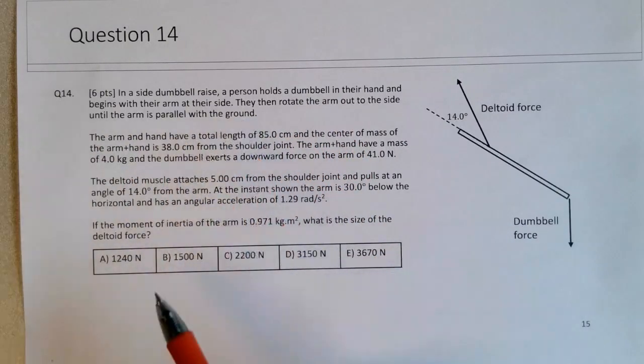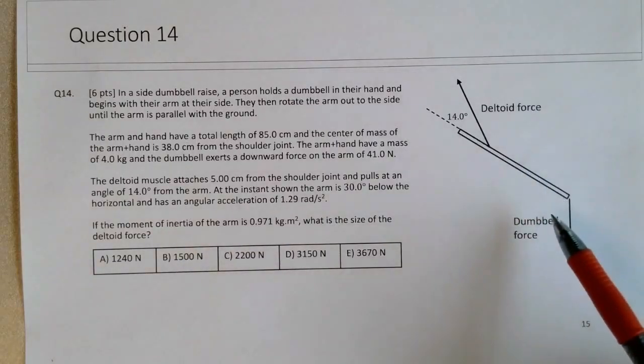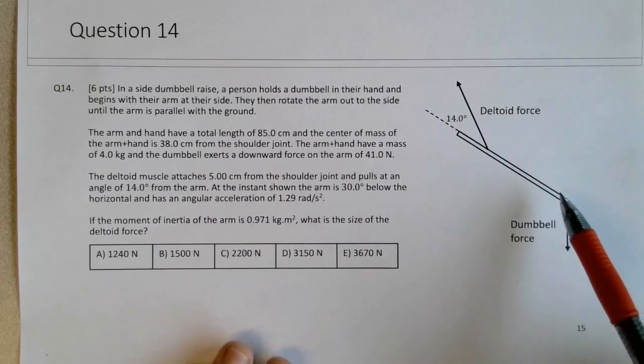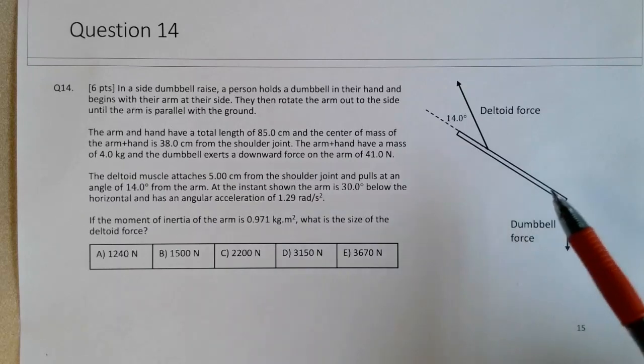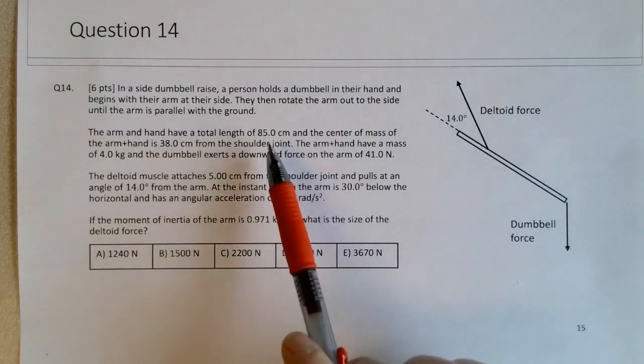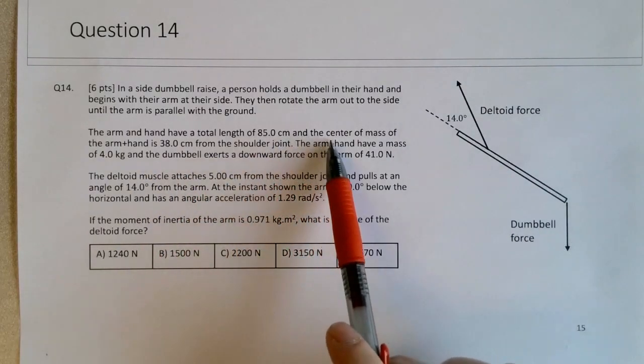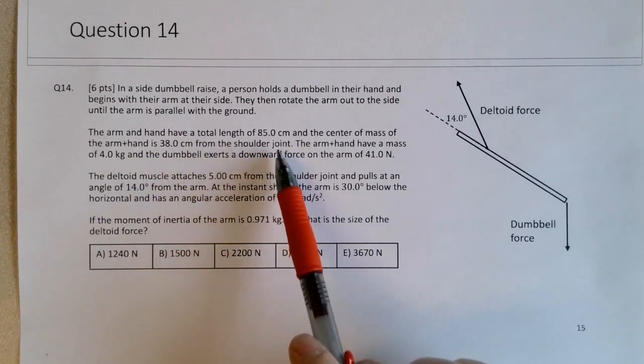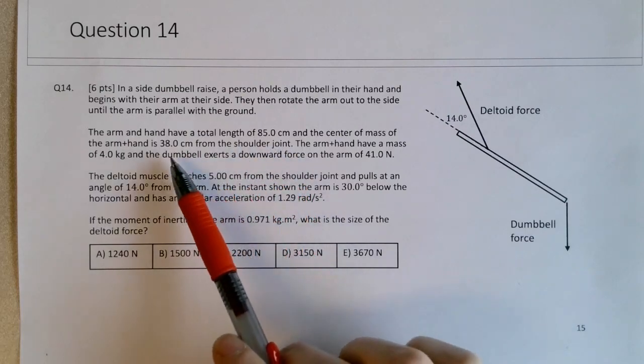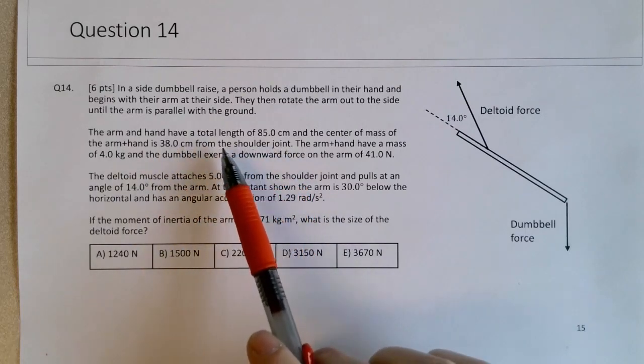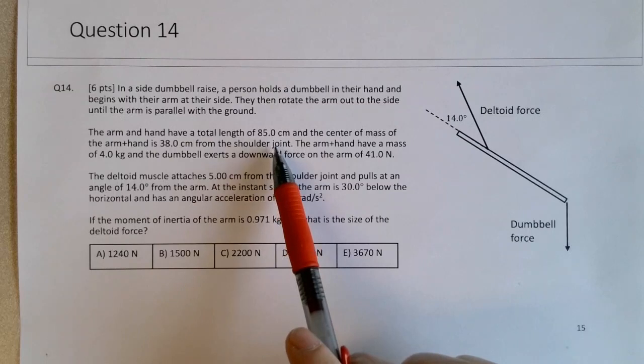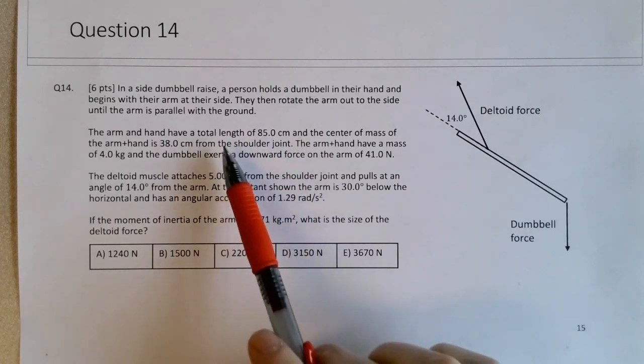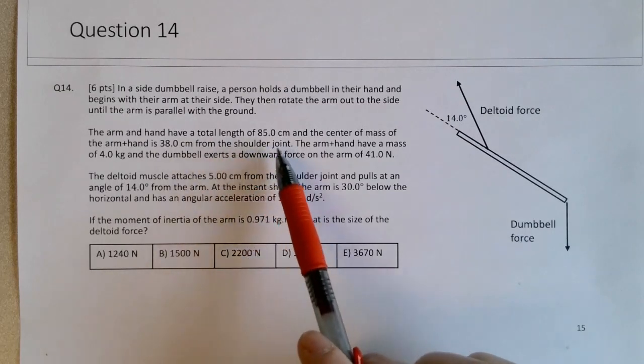Until the arm is parallel with the ground. We're looking at one particular instance in that exercise. We're told that the arm and hand have a total length of 85 centimeters, and the center mass of the arm and hand is 38 centimeters from the shoulder joint. So we're not treating it purely as a uniform rod. The center mass of the arm and hand is closer to the shoulder, which probably makes sense because most of the mass is in the tricep and bicep.